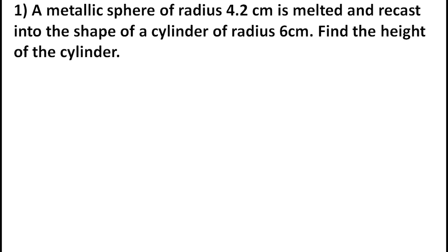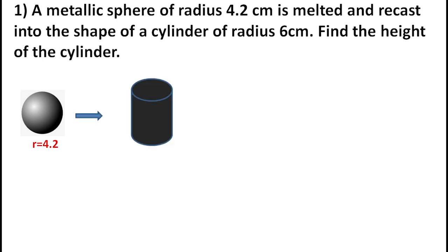Hi students, today we are discussing CBSE Class 10 Chapter 13, Surface Area and Volumes, Exercise 13.3, Questions 1, 2, and 3. Our first question is: a metallic sphere of radius 4.2 cm is melted and recast into the shape of a cylinder of radius 6 cm. Find the height of the cylinder.